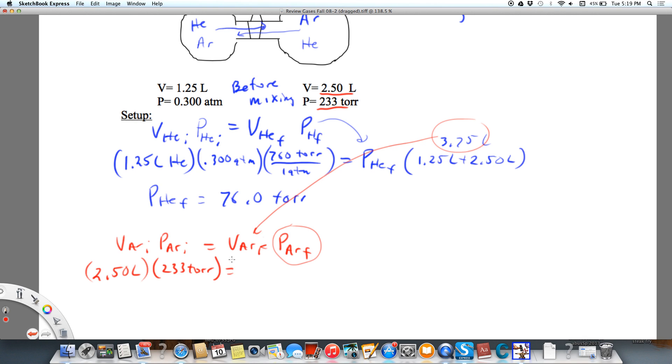That's going to equal my new volume, which is 3.75 liters. Remember, gases always fill their container, times the pressure of argon final. Solving for the pressure for argon final, we get 155 torr.